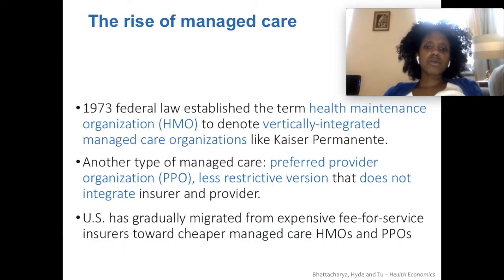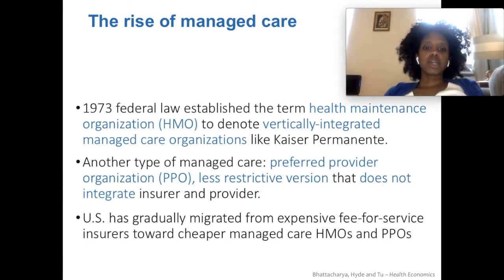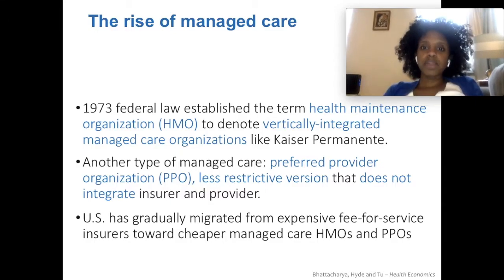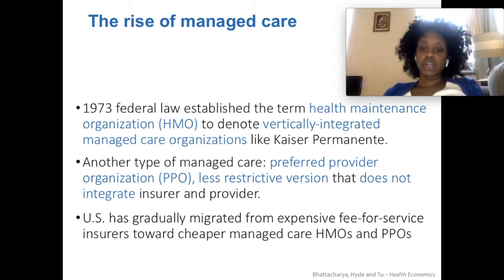In 1973, federal law started to react to this new thing entering the market, using the term Health Maintenance Organization — HMO — for the more restrictive, vertically integrated managed care organizations like Kaiser Permanente. A PPO, or Preferred Provider Organization, is the less restrictive version — they have certain providers they prefer but don't necessarily restrict you to only a company doctor. The U.S. has largely migrated towards HMOs and PPOs instead of completely broad fee-for-service models.